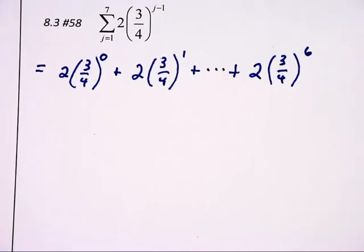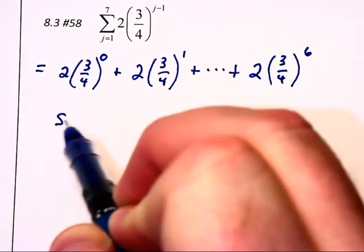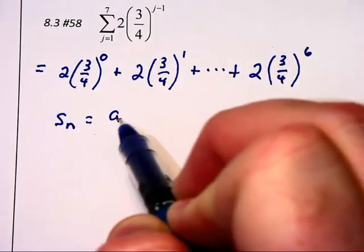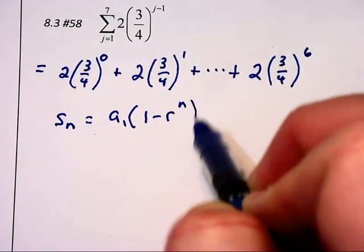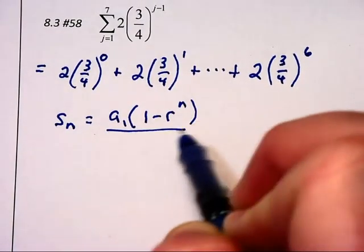Well that's all fine and dandy. We could figure all these out if we wanted to, but maybe this time, instead of doing it out manually, I will use the formula. S sub n is equal to a1 times 1 minus r to the nth power, divided by 1 minus r.